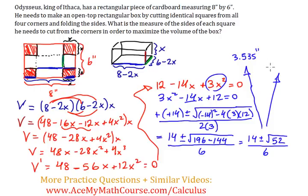And the second solution would be 14 minus root 52 divided by 6, which measures 1.131 inches. I guess we'll just stay consistent and round to the third decimal place, to the nearest thousandth.